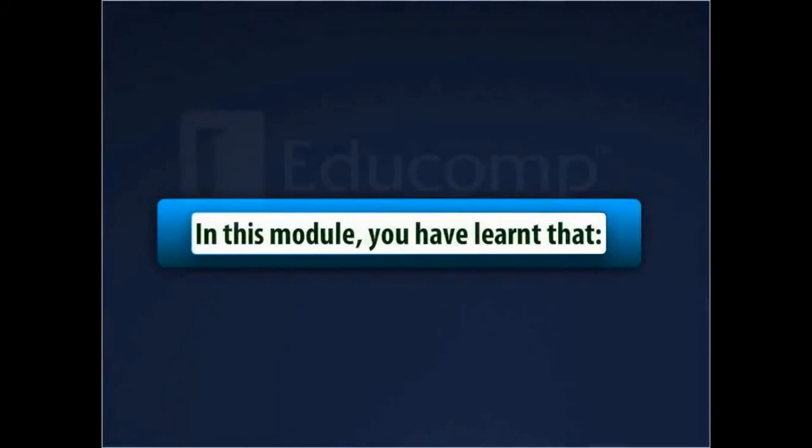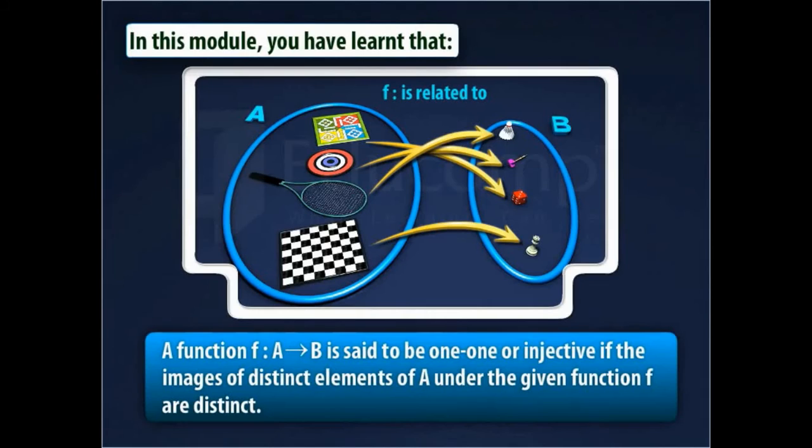In this module you have learned that a function F from set A to set B is said to be 1-1 or injective if the images of distinct elements of A under the given function F are distinct.